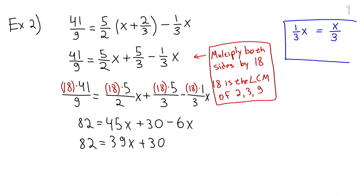45x with minus 6x becomes 39x. I subtract 30 from both sides. And I get 52 equals 39x. And then I finally get that x is 52 divided by 39. And if I simplify this fraction, this becomes 4/3. So the solution to this linear equation is x equals 4/3.